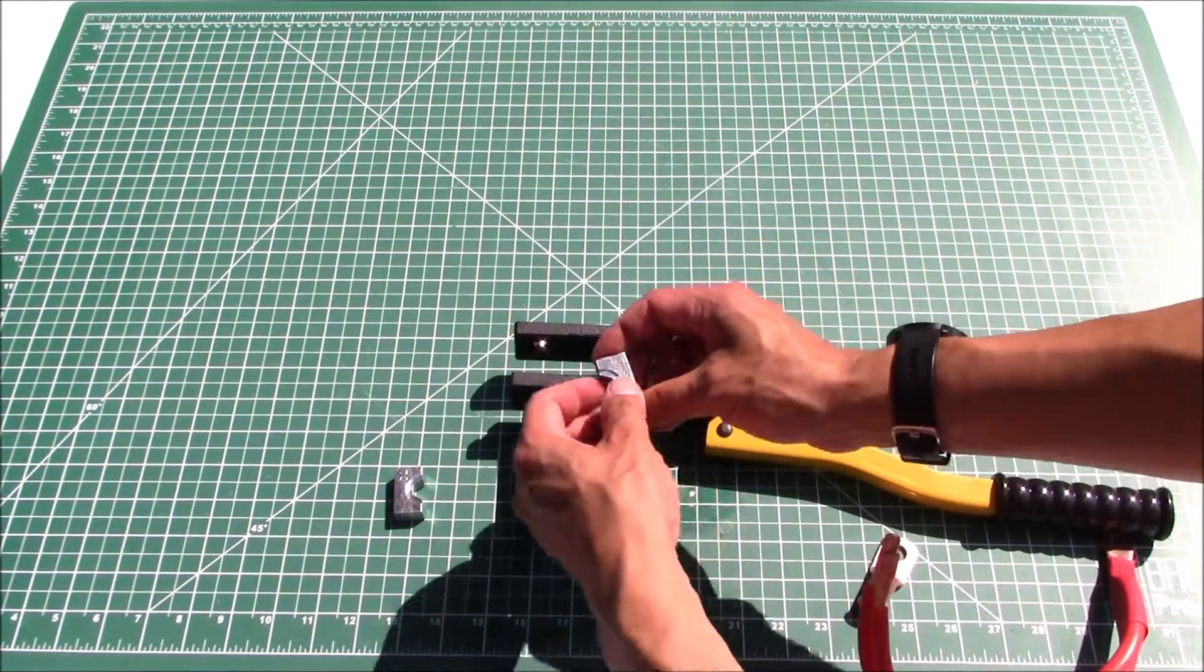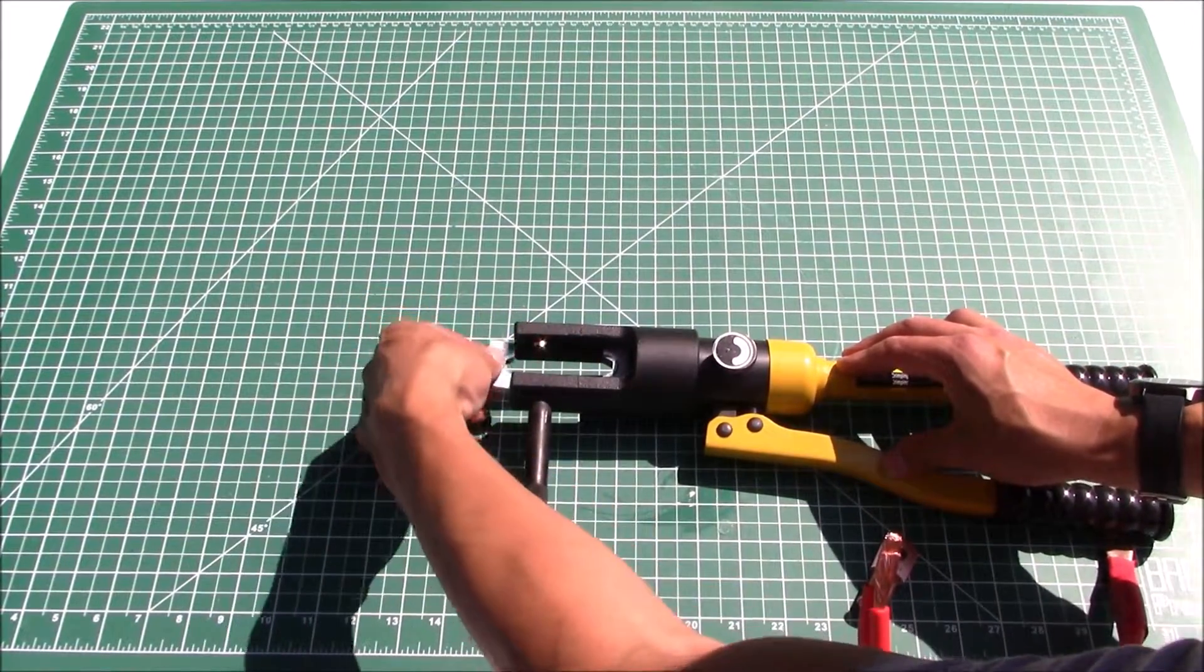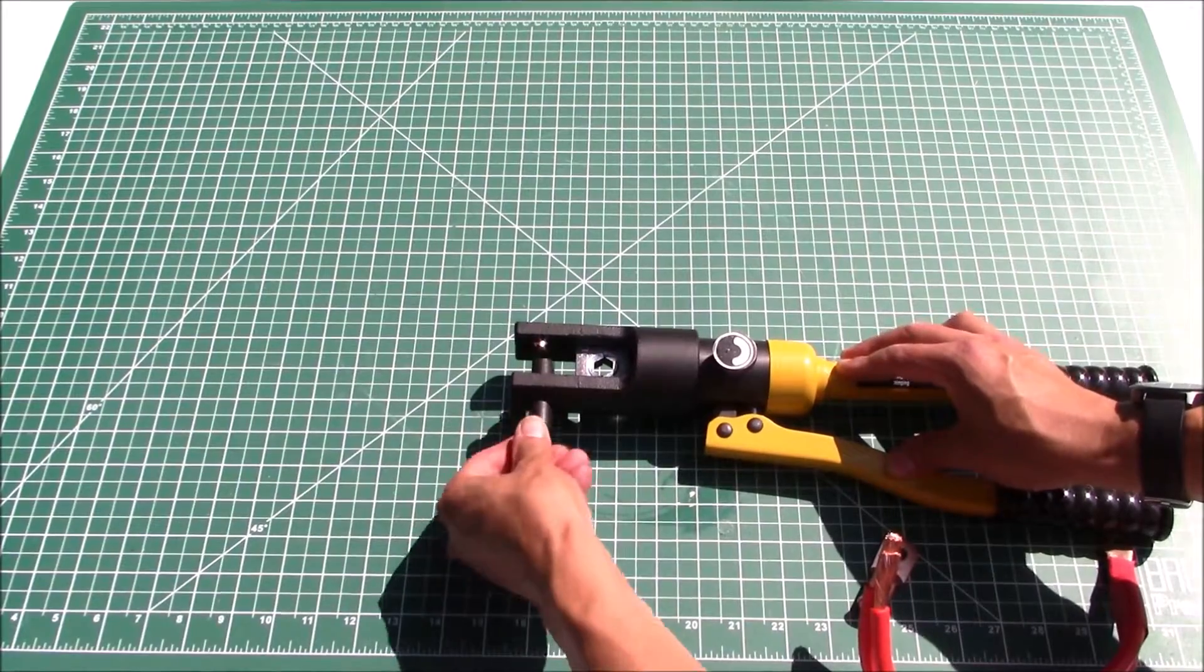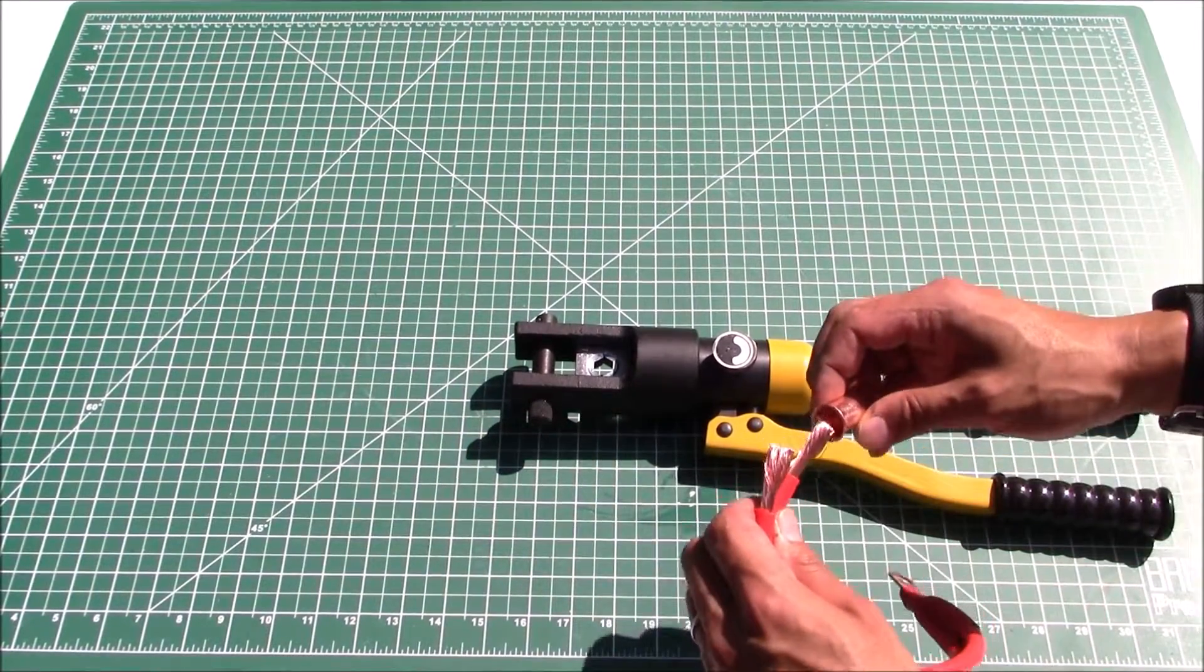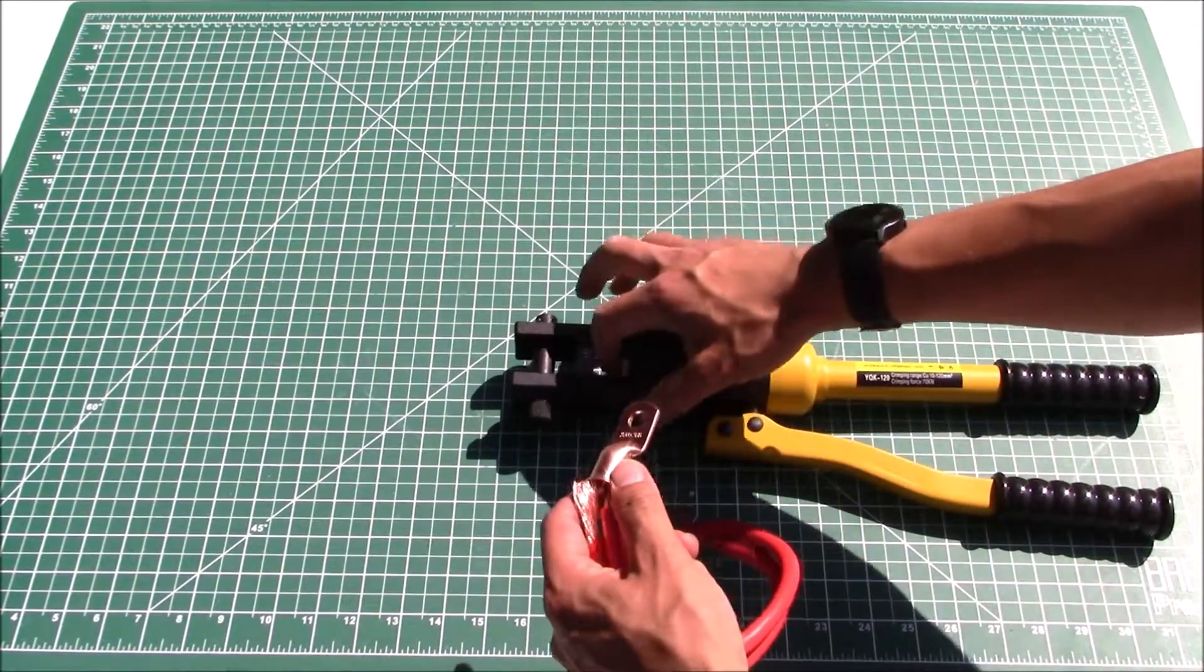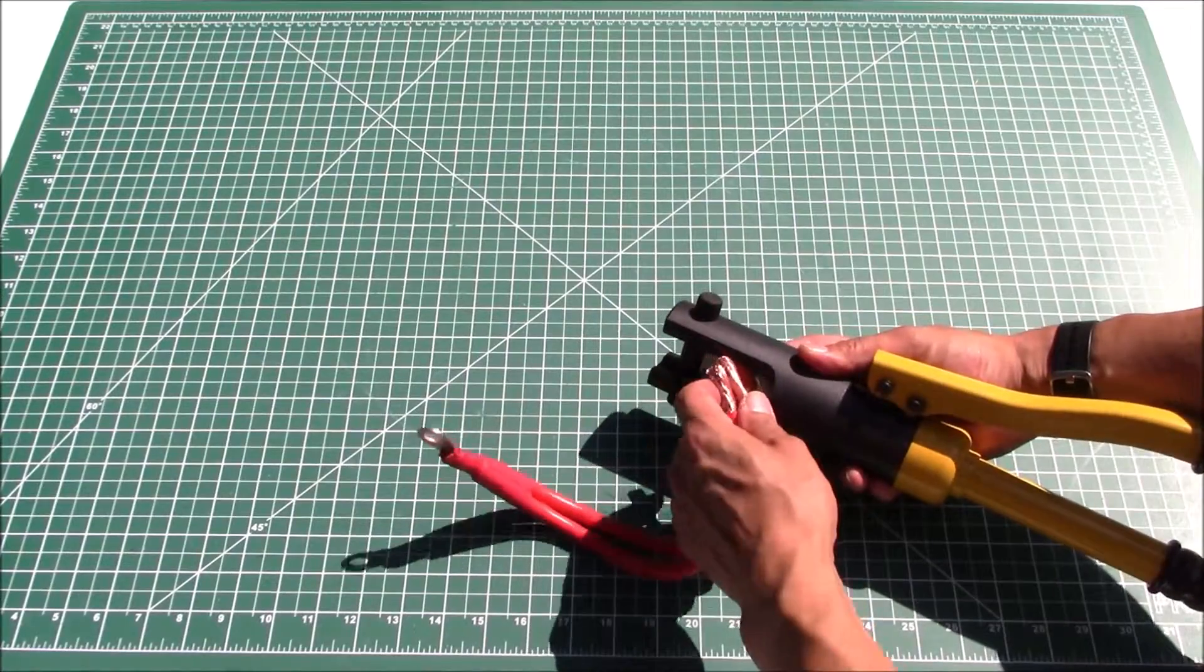Let's go ahead and put the dies in the crimping tool. Tighten this guy up. Now all we need to do is open up the tool and work this in.